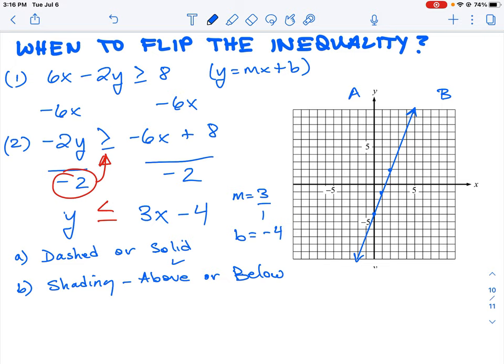The way we look at it is we look at our inequality. If the inequality is less than, that means we are going to shade the lower region. Just remember, both start with the letter L - less than or lower.